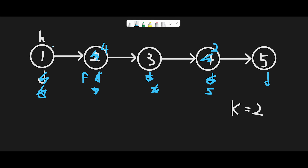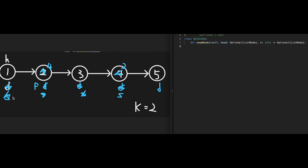That is the basic idea. Now let's write the code. First, create the dummy node: dummy equals head. Then move the dummy node k minus one times using a for loop: for underscore in range k minus one, dummy equals dummy dot next.